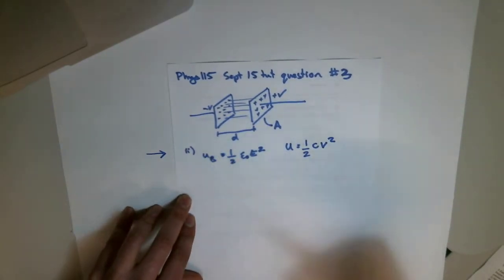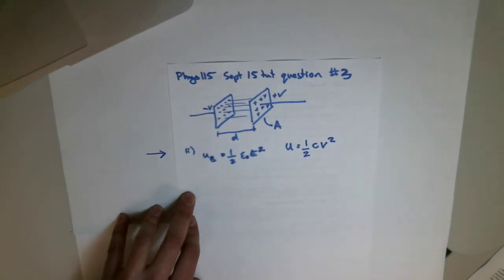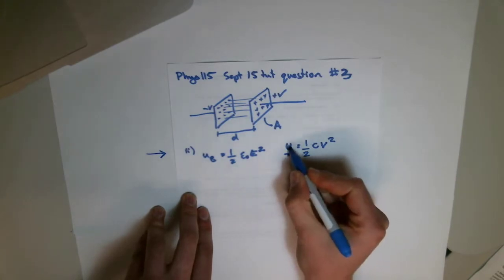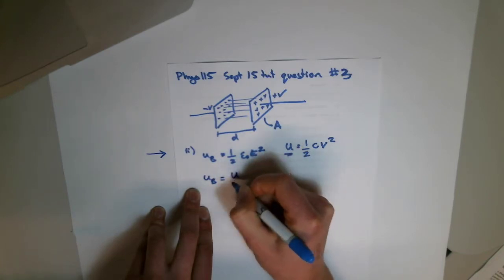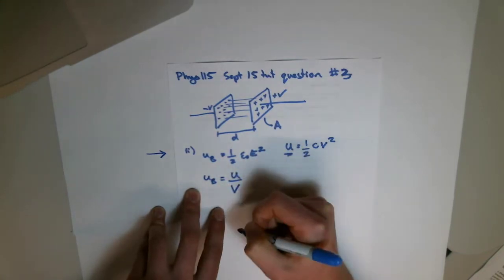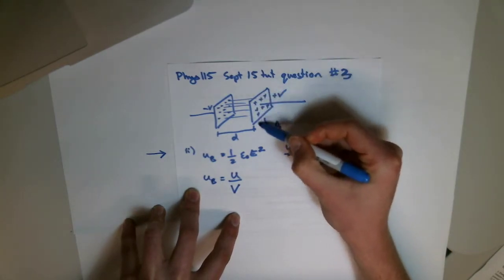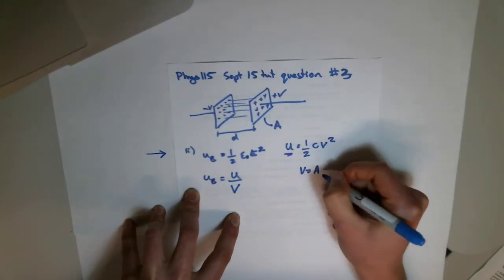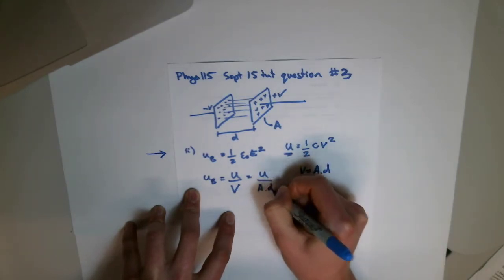I would do it by starting with the definition of this energy density here, energy per unit volume. So this is our total energy, and we know to turn this into this, we need to write energy per unit volume, UB, is the total energy divided by the volume of the system. Now, what is the volume of our system? Well, the volume is just going to be the area of our capacitor plates times the distance between them. That's the total volume here, so we can write this as A times D, and this will become capital U over A times D.